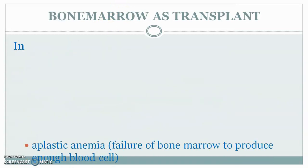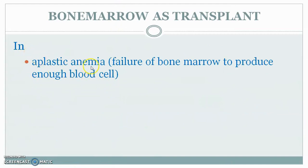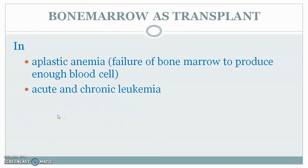Bone marrow transplant is usually done in cases of aplastic anemia — where the bone marrow fails to produce enough blood cells, so the blood cannot carry enough oxygen to the cells, resulting in low energy production. It is also done for acute and chronic leukemia, breast cancer, and some lymphomas.